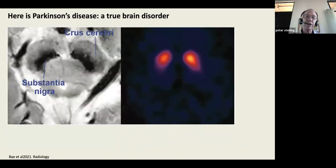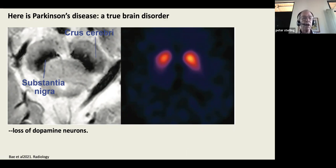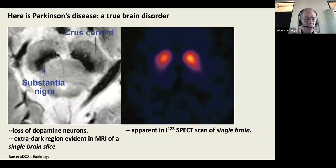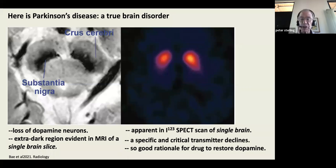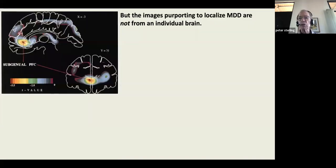Parkinson's disease is a real brain disorder. Dopamine neurons in the substantia nigra die and are lost, causing a detectable change visible in a single brain's MRI or PET scan. A specific and critical transmitter — dopamine — is lost, providing a good rationale for a drug to restore it. By contrast, the images purporting to localize major depressive disorder are composites from PET scans of about 30 patients — not individual brains.